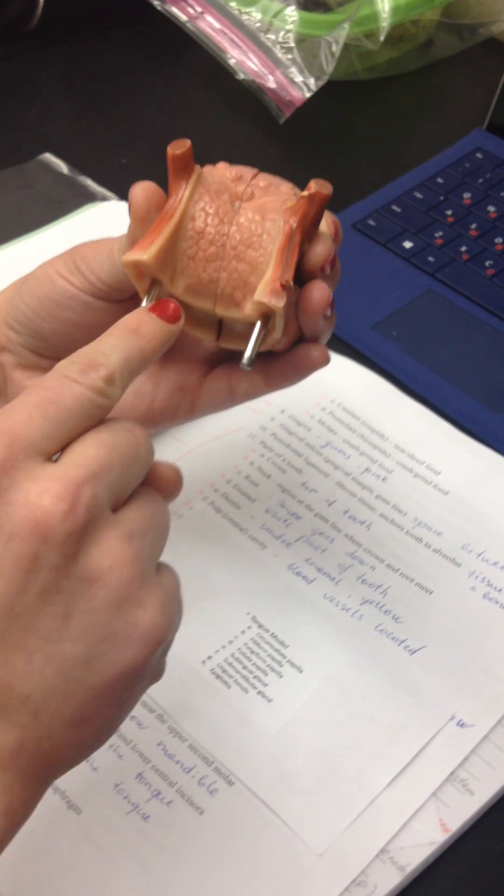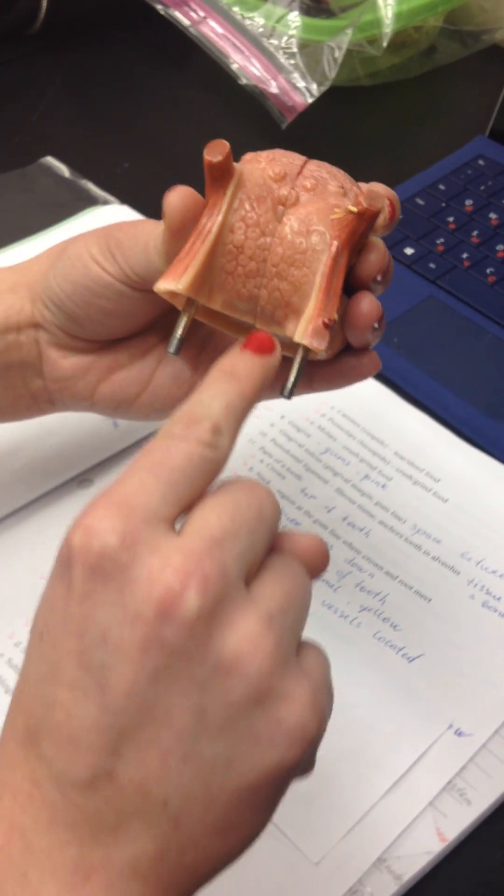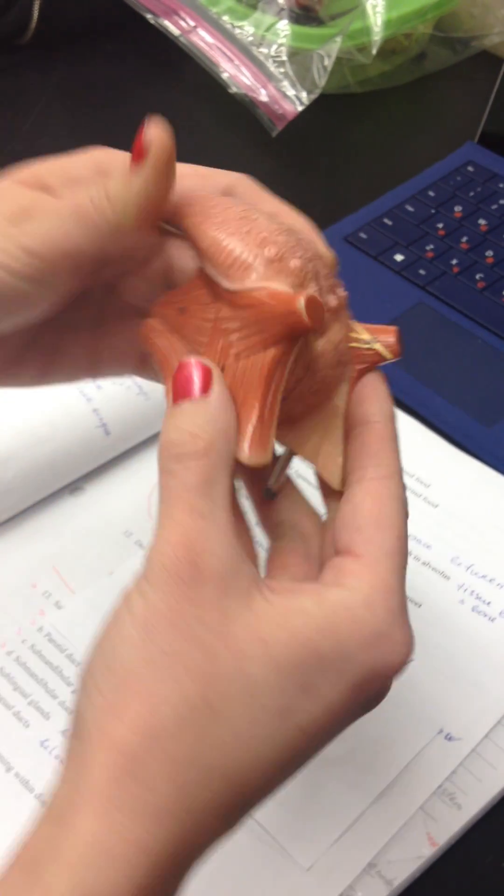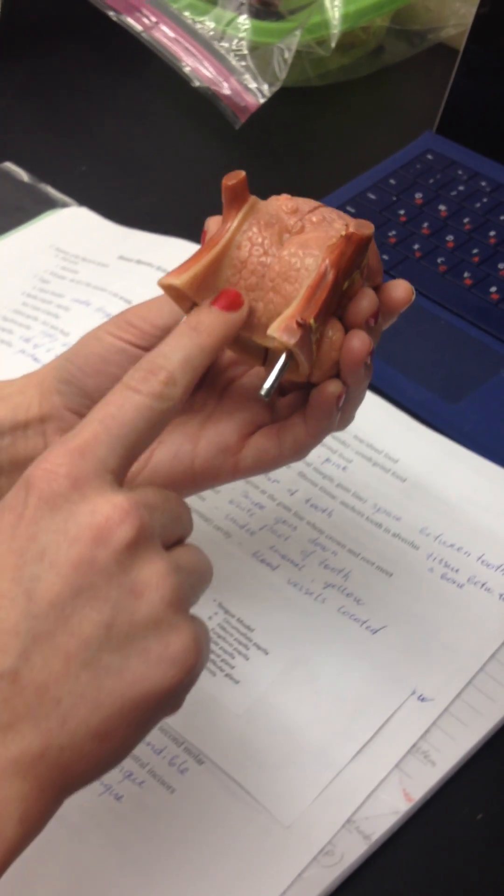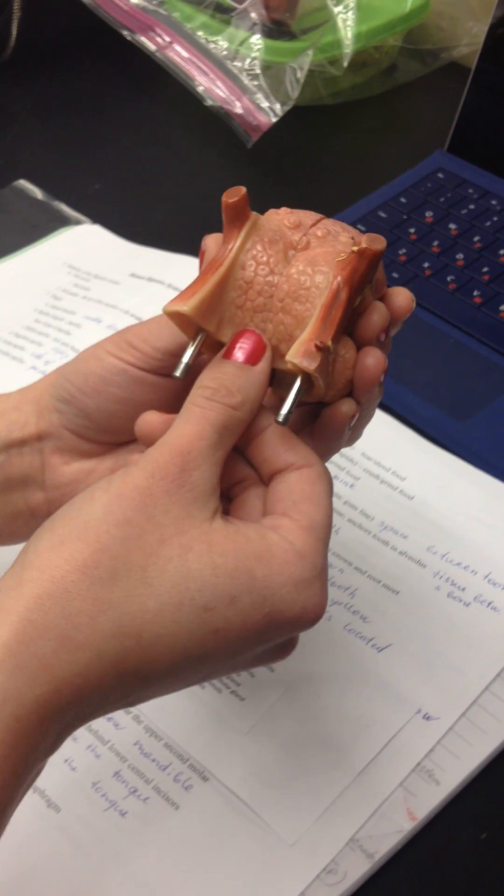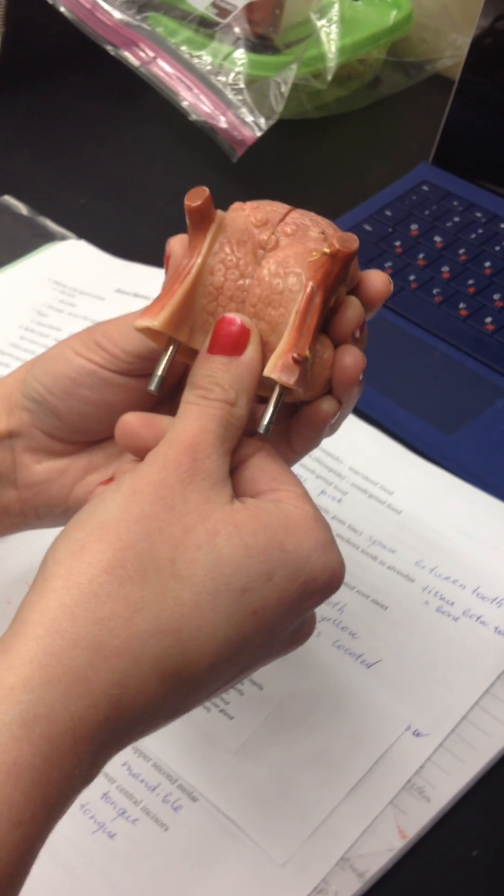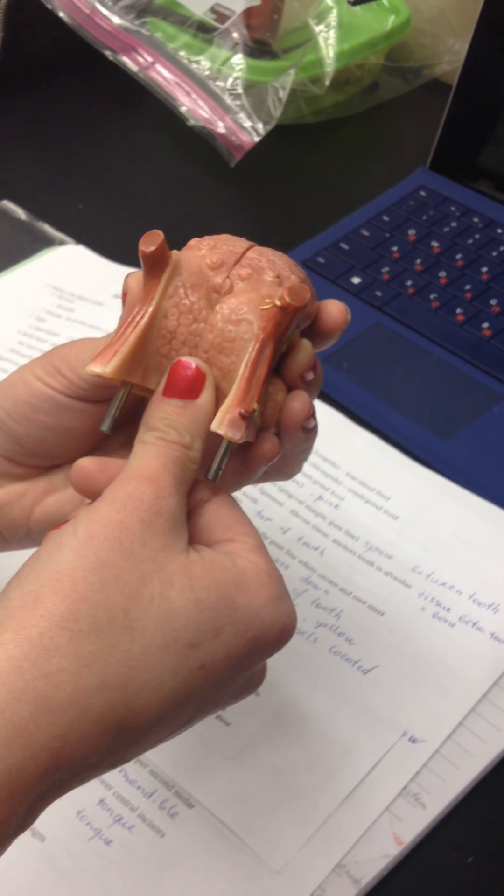And then your epiglottis would be right about here if the throat was connected. The only other thing I can think of is right here, we have a tonsil at the base of your tongue. That's going to be your lingual tonsil. Anything with lingual refers to tongue.